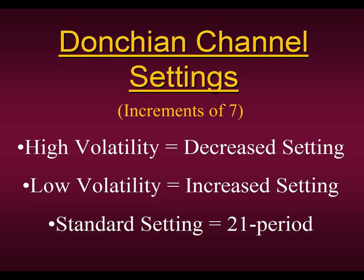Now if we get into summer — going into July and August where there's really nothing happening in the market — we can experience low volatility, so we will increase the settings, probably to a 28-period or even a 35-period Donchian Channel. So as long as the markets are behaving normally, the standard setting is a 21-period, and that's how we will be issuing our signals on a nightly basis using strategy number one, unless we notify you that we've changed the setting because of the volatility. I hope this makes sense and explains everything clearly to all of our members.